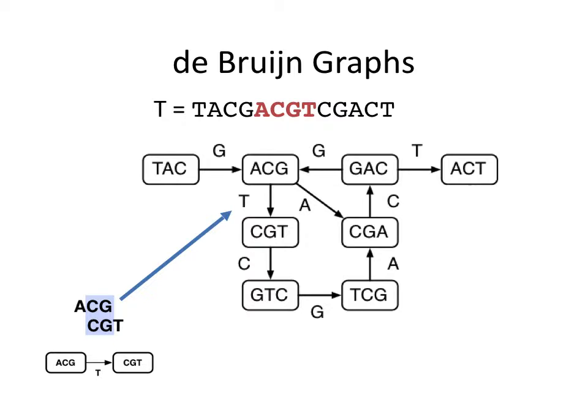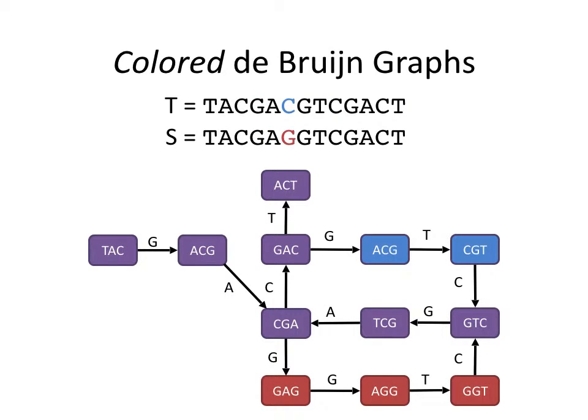The structure of a colored de Bruijn graph is the union of each sample's graph, while maintaining a color for each sample. Here, purple represents vertices that exist in both subgraphs and represent portions that align identically. Mismatches form bubbles where vertices have only one color. This compactly encodes the pairwise alignments amongst many sequences, but it doesn't scale enough. Thus, we turn to succinct data structures.